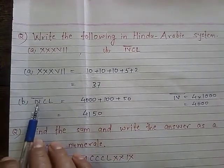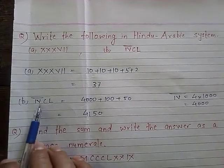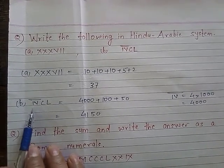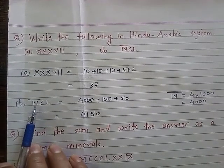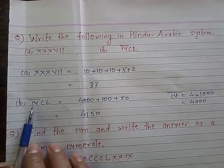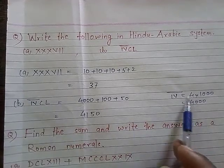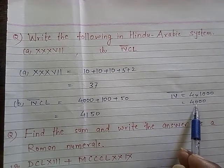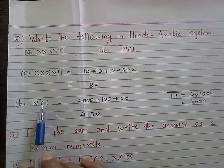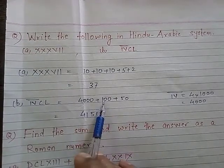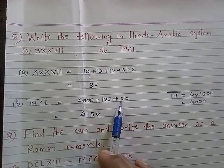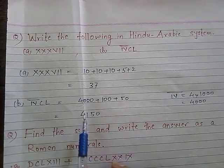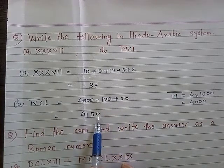Next: IV with a vinculum over CL. IV is 4, and a vinculum means multiply by 1000, so IV-vinculum equals 4000. C is 100 and L is 50. After adding: 4000 plus 100 plus 50 equals 4150.